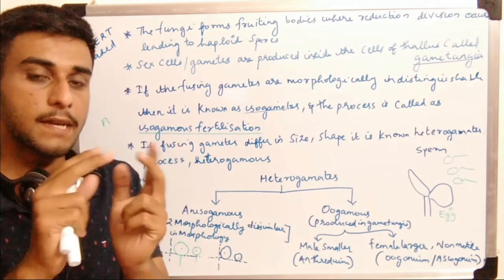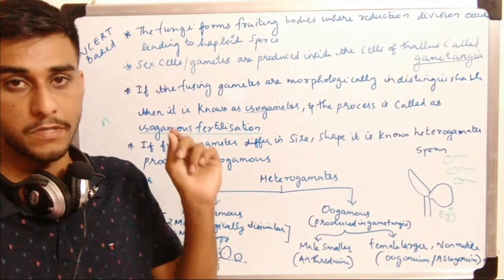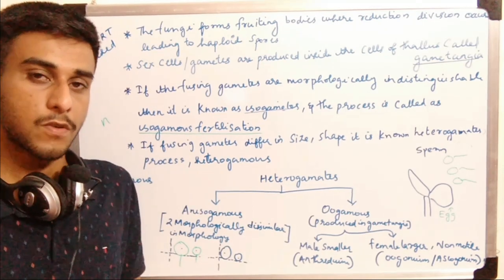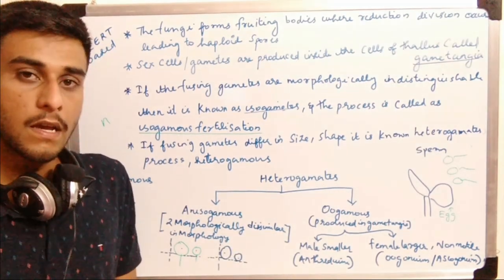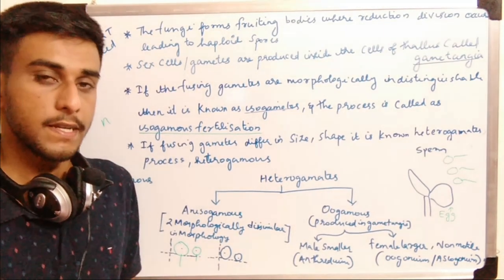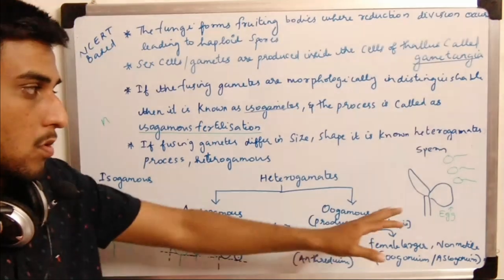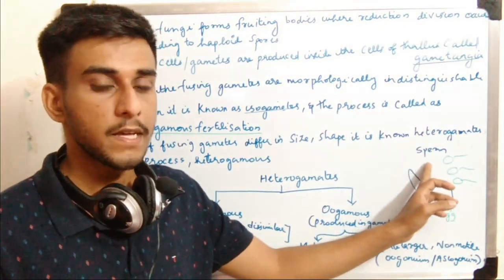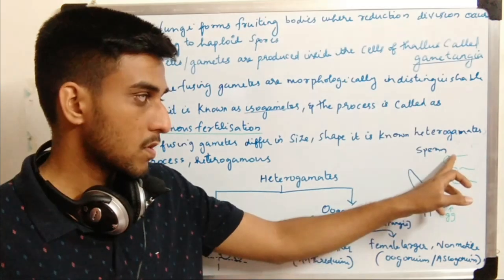In the gametangium, the male gametangium is known as the antheridium, which produces male gametes. The female structure is known as the ascogonium or oogonium, producing the egg cell. In sexual reproduction, sperm cells produced by male gametes will be either motile or immotile depending on the class of fungi.